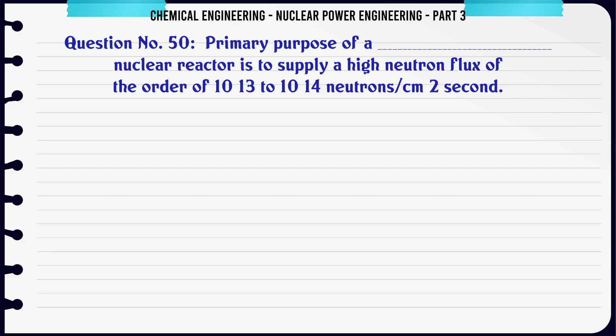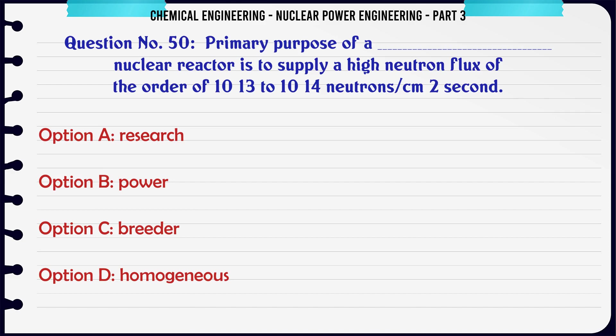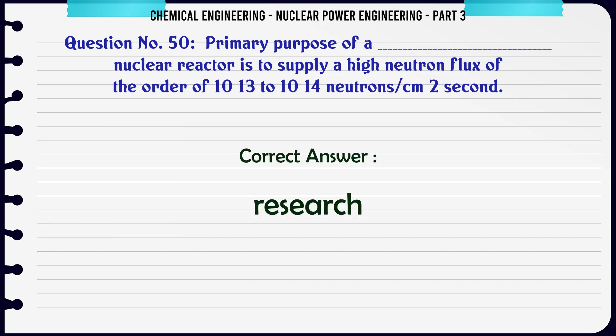Primary purpose of a research reactor is to supply a high neutron flux of the order of 10^13 to 10^14 neutrons per cm² per second. The correct answer is research.